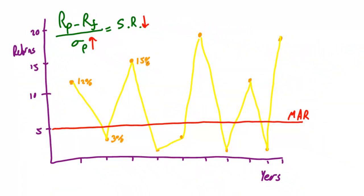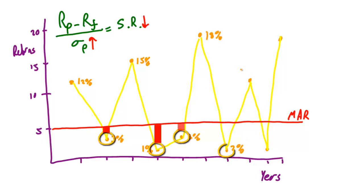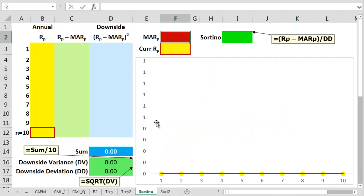That's where Frank Sortino came in in the 1980s. He gave us a much sharper ratio than the Sharpe Ratio, and he only used downside deviation. The lower this figure, the higher and better the ratio becomes.